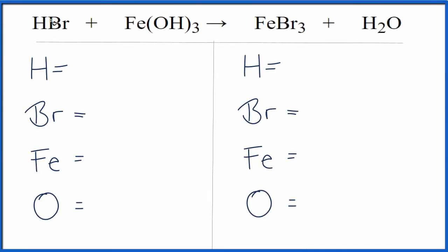To balance this equation, we have hydrobromic acid plus iron-3-hydroxide. That gives us iron-3-bromide plus water. We'll count the atoms up.